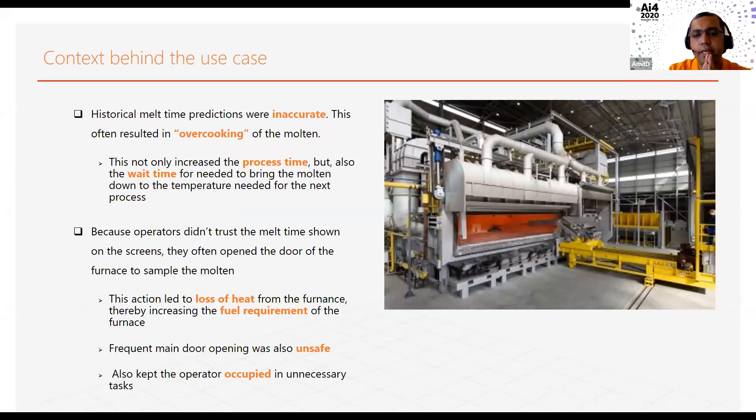predicting the melting time accurately is quite important. Historically, we had a thermodynamics-based equation that used to do this prediction. However, for various reasons, this prediction was inaccurate, which often resulted in overcooking of the molten metal. This creates two problems. One is it increases the process time to melt the aluminum, but it also increases the wait time so that the next process can accept the molten. We have to wait until the temperature comes down to a specific temperature point.